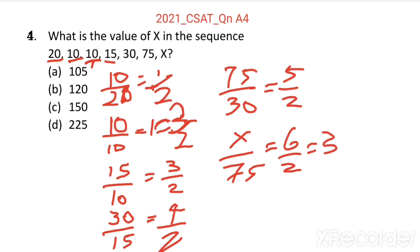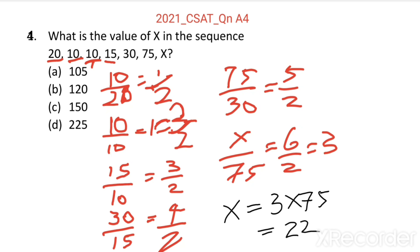Then we can say from here, X equal to 3 into 75, which is equal to 225. So the sequence is progressing by 1 by 2, 2 by 2, 3 by 2, 4 by 2, 5 by 2, 6 by 2. So finally, we get X equal to 225. Option D is the right answer.